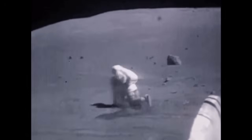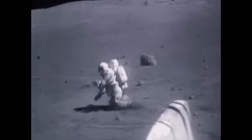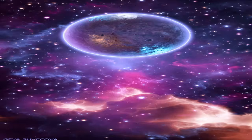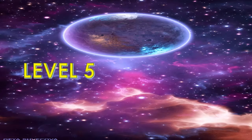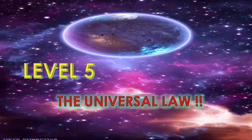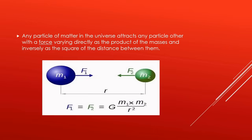Level five: the universal law. Newton said that the force of attraction between any two bodies is directly proportional to the product of the masses and inversely proportional to the square of the distance between them.